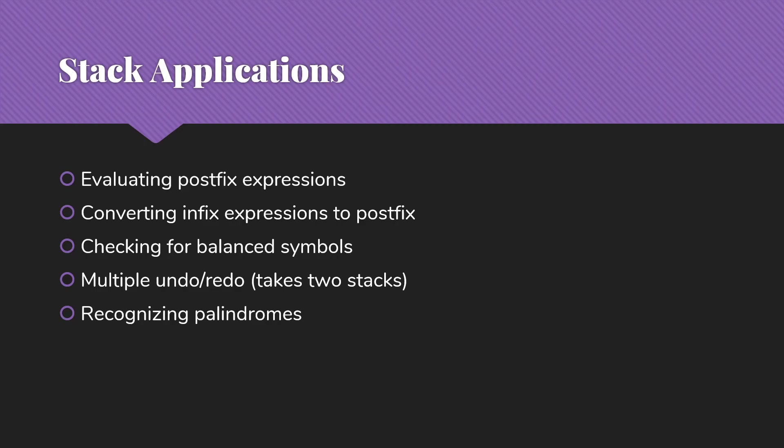Recognizing palindromes is another application. If we have a string and want to know if it's a palindrome, one way is to push the first half of the string onto a stack and then start popping things off and comparing them as we continue through the string. If they all match, we had a palindrome. If you have an odd number of letters, just discard the middle element; if even, do it exactly as described.